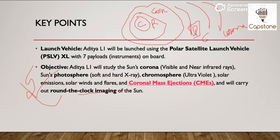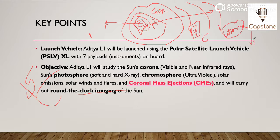Photosphere woh layer hai jo generally hum sun ke outer surface ko jab dekhte hain toh hume dikhti hai. Jo hum yahan par samajhna chahte hain woh ye hai ki core ek aisi jagah hai jahan par continuously nuclear fusion reaction hoti rehti hai, jiske kaaran sun ke andar bahut saari energy generate hoti hai. Yahi energy yahan se bahar jaate jaate transfer hoti jaati hai. Toh iske according, jo corona hai, corona ka temperature jo hai, woh photosphere aur chromosphere se kam hona chahiye, kyunki yeh sabse outermost layer hai. But it was observed ki jo corona hai, uska temperature bahut zyada dikhta hai agar hum compare karein photosphere aur chromosphere se. Isi kaaran se, is anomaly ko samajhna bhi bahut zaroori hai.